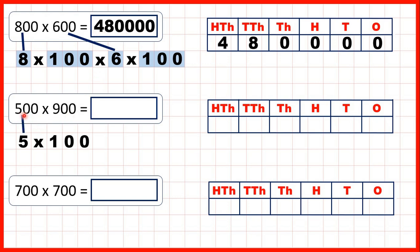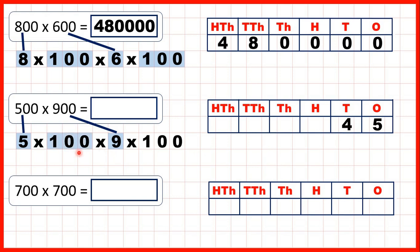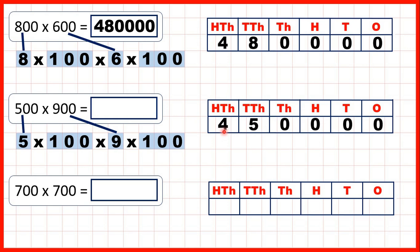Now 500 is 5 times 100, and we're multiplying by 900, which is 9 times 100. Again we can multiply in any order, and 5 times 9 is 45. When we multiply by 100, digits move two squares across, and we're multiplying by 100 again, so we move another two place values across to give us our answer: 450,000.